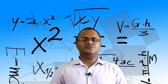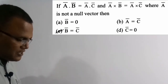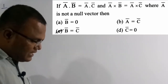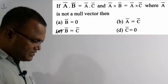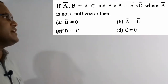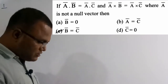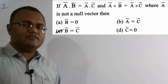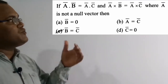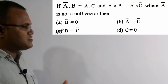Let's get started. The first question: if ā·b̄ = ā·c̄ and ā×b̄ = ā×c̄, where ā is not a null vector, then what condition is satisfied? Option C is the correct solution: b̄ = c̄.